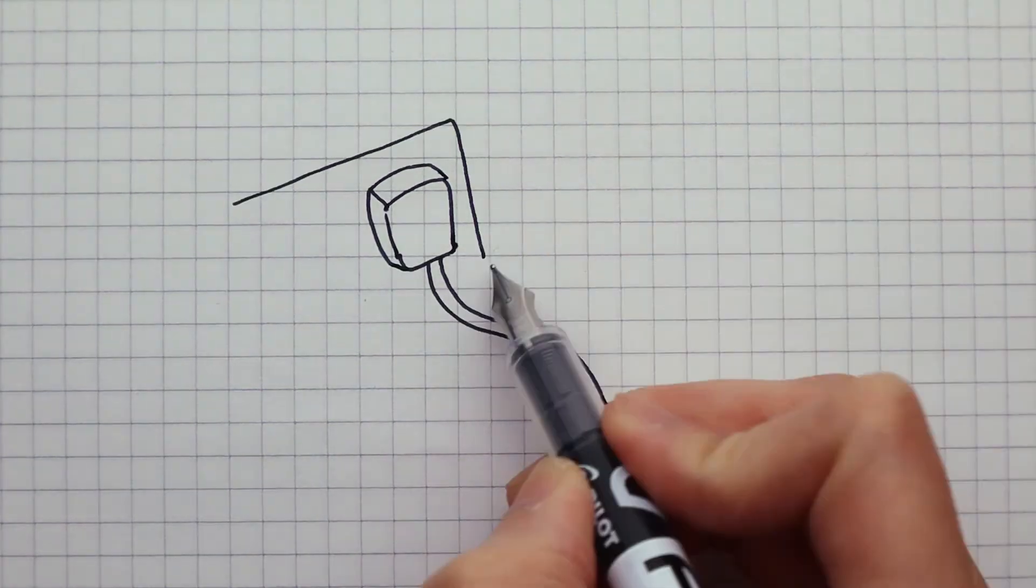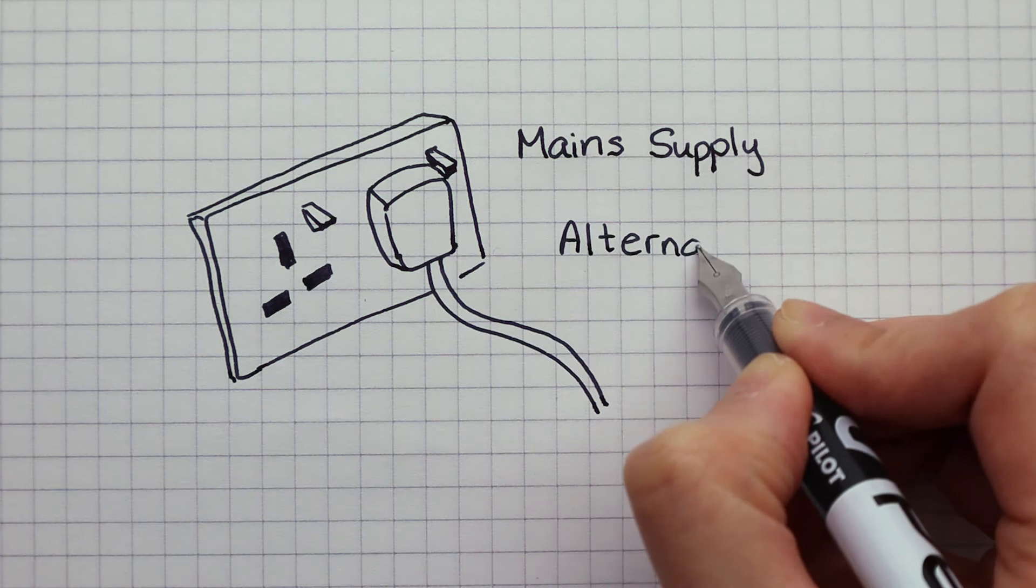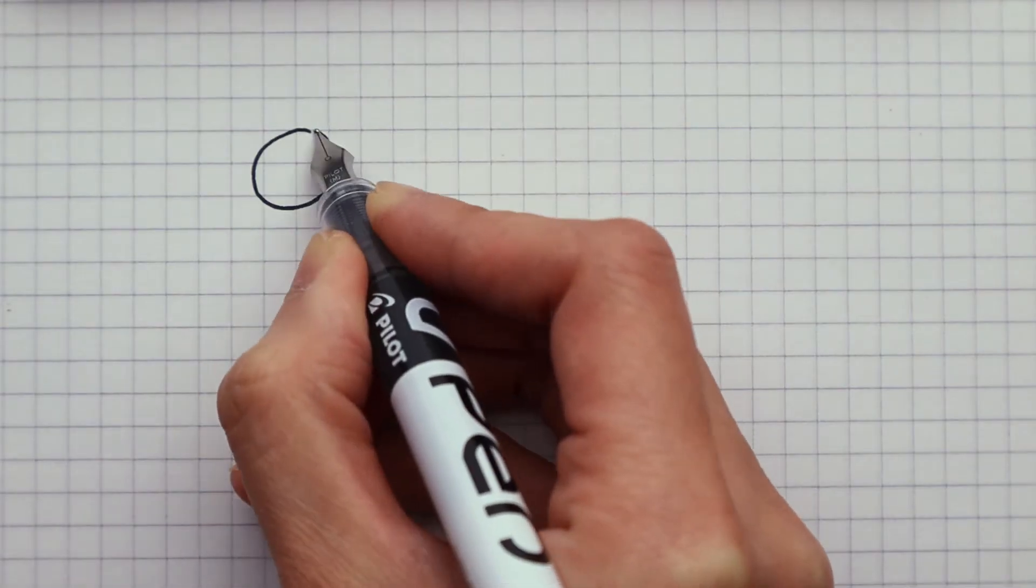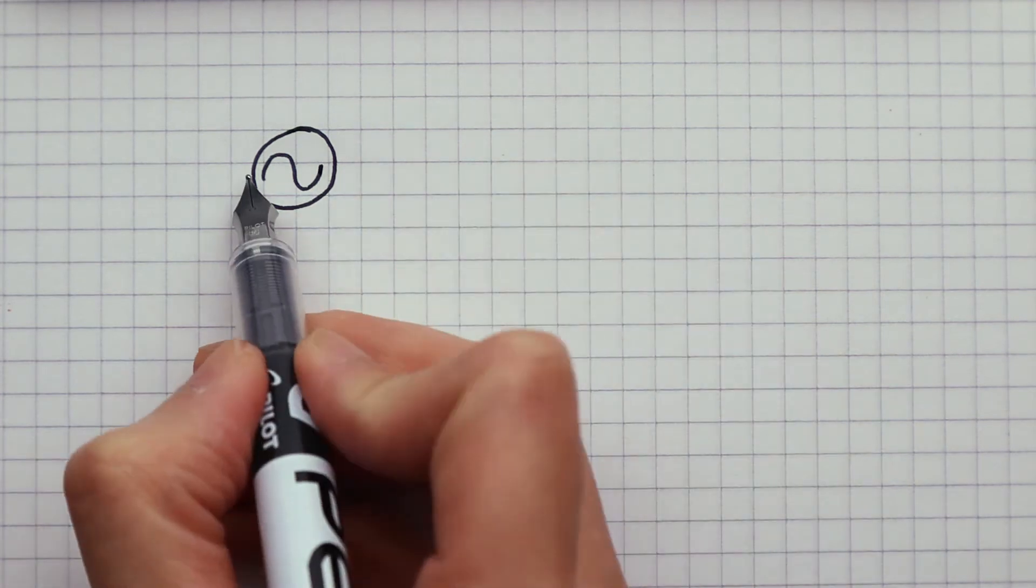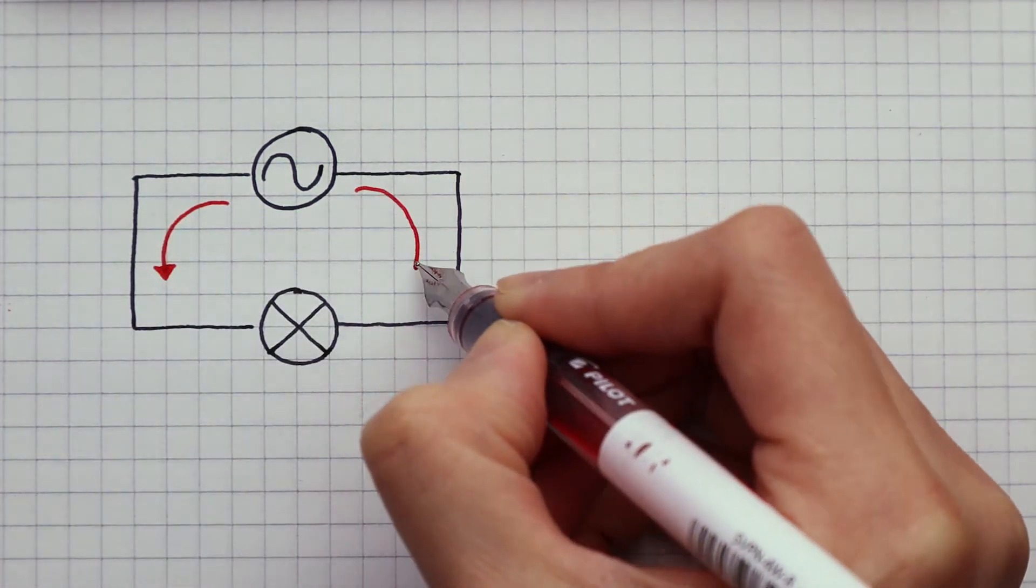The mains electrical supply from your wall socket delivers what's called an alternating current, or AC current. The mains power supply is drawn using this symbol. The current from this power supply alternates in two directions.